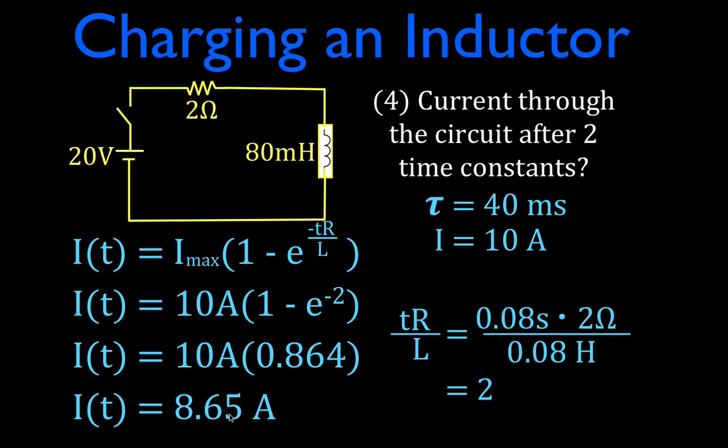So 86.4 or 0.864 times 10 is obviously 8.64. Probably with rounding, this is 8.65 amperes, same with the value we have here. Okay.